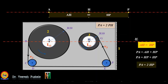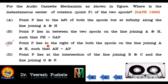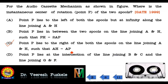Point P lies to the right of both the spools on the line joining A and H such that AH is equal to HP. We are fulfilling both conditions: it is lying on the right side and AH is equal to HP. This is how we solve this interesting problem. I hope you have now understood how to approach these types of problems, and I wish you all the luck to practice and solve more gate problems and problems from your textbook. Thank you very much.